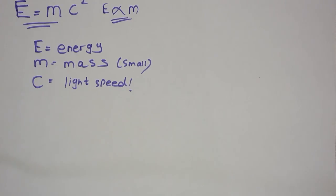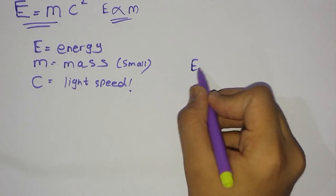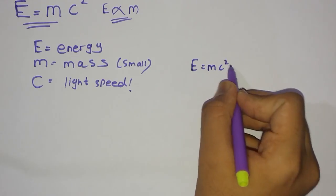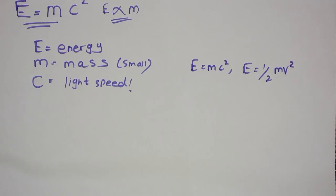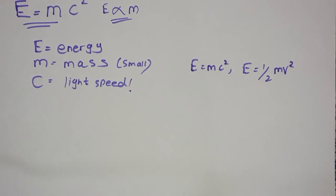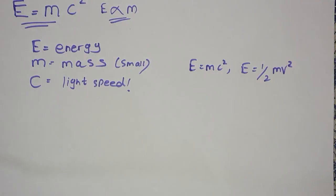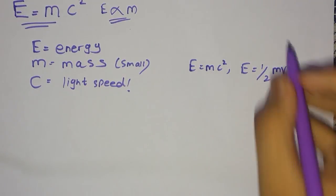But what's the difference between E equals to M C squared and E equals to half M V squared? Let me tell you there is a very huge difference. I'm going to tell you right now. So, first coming on to E equals to half M V squared.